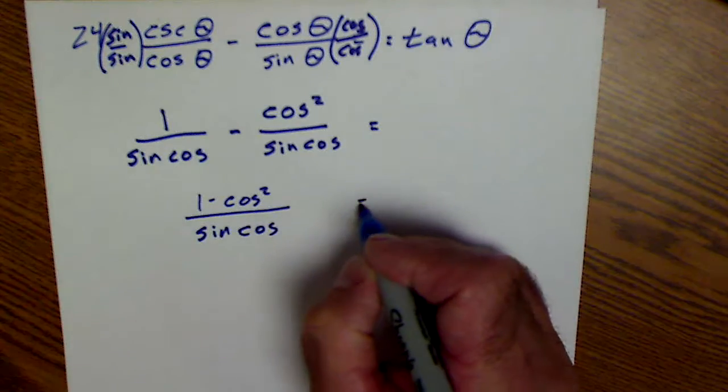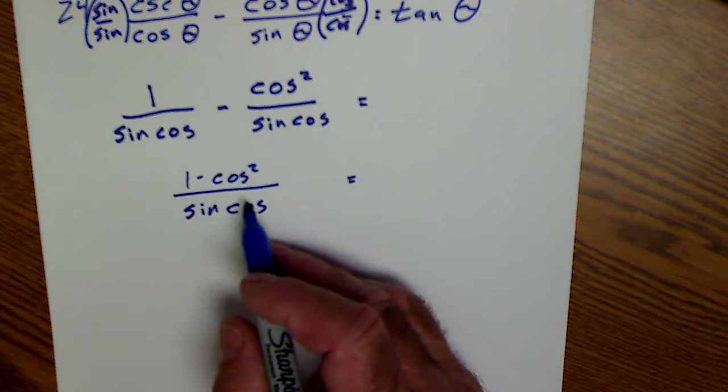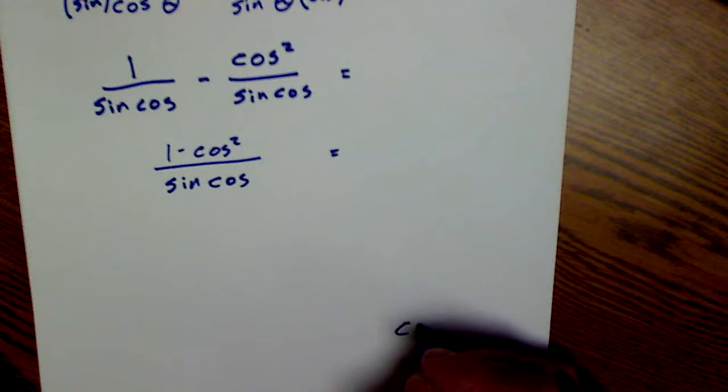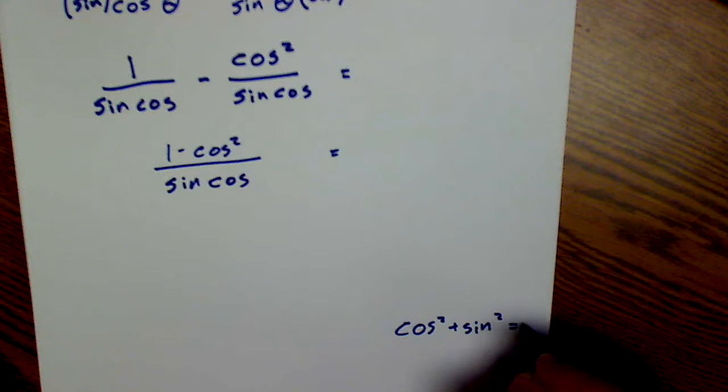And hopefully you recognize this as a Pythagorean identity. Anytime there's a square, it's probably going to be a Pythagorean identity. So if I have cosine squared of theta plus sine squared of theta equals 1...